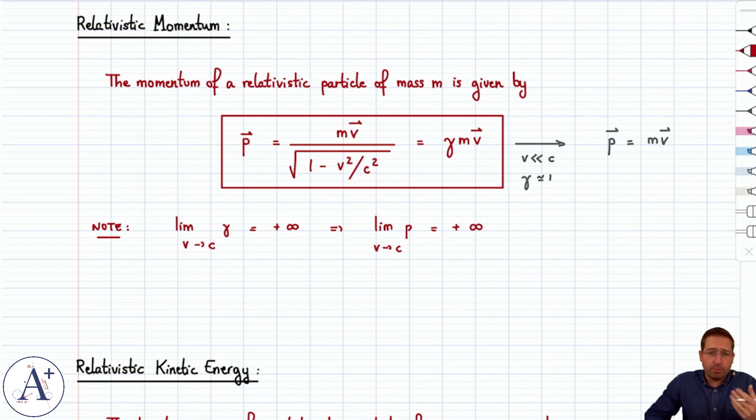Which means that if you have a particle of mass m that's at rest, you actually cannot accelerate it to a speed v equals c. It will require an infinite amount of energy and it's impossible. You can get reasonably close, but you can't actually reach v equals c.